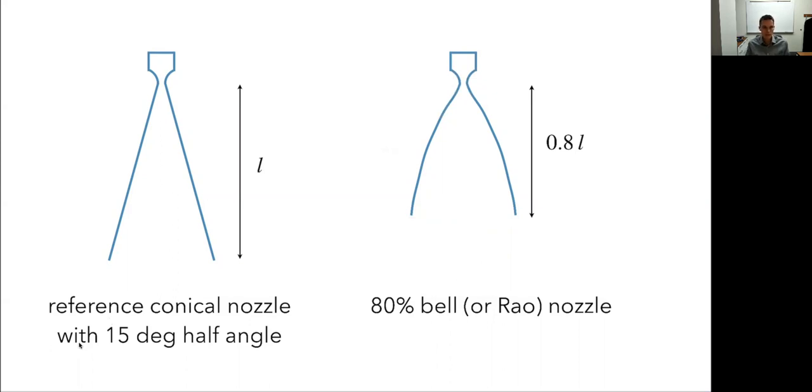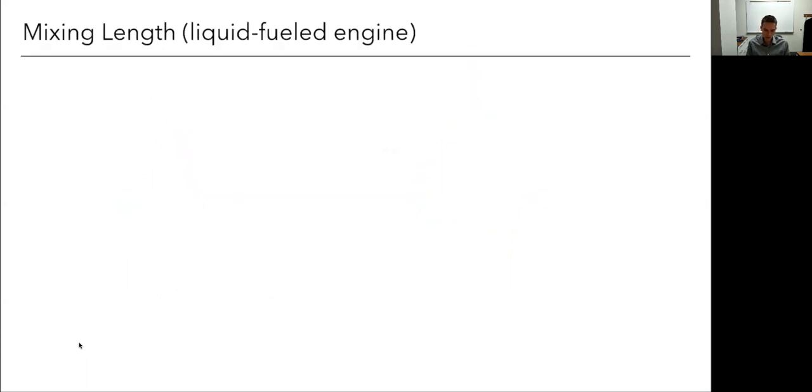One last thing, and that's talking about the combustion chamber, how to size it. Frankly, these are sized just based off of historical data, looking at similar designs with similar propellants. An approach that's really not used that much anymore, but has been used in the past is to use what's called the mixing length. If I have, here's my combustion chamber. Here's this combustion chamber and it's going to narrow down. Here we go. The volume, there's the volume of the combustion chamber.